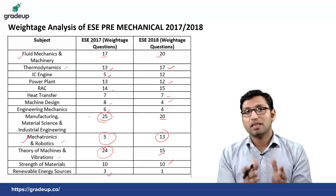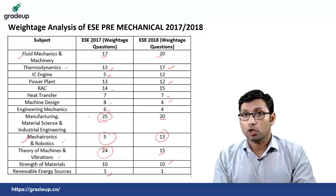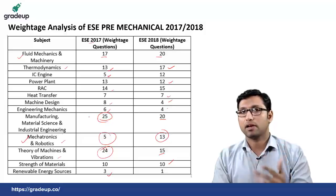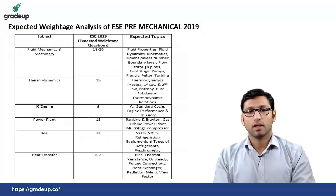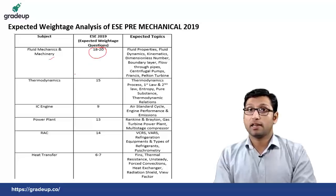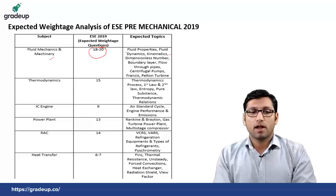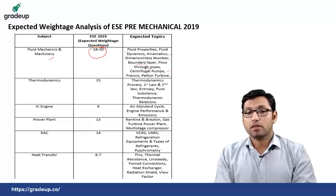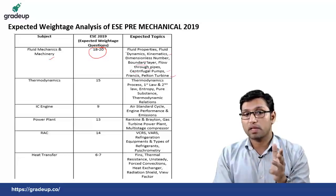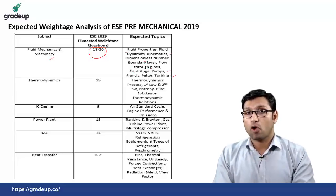Based on this weighted analysis, I have done an expected weighted analysis for ESE prelims paper 2 for the 2019 examination. According to me, from fluid mechanics and machinery there can be around 18 to 20 questions from the topics of fluid properties, fluid dynamics, fluid kinematics, dimensionless number, boundary layer, flow through pipe, centrifugal pump and Francis and Pelton turbine. From thermodynamics there can be 15 questions from thermodynamics processes, first and second law of thermodynamics, entropy, pure substance and thermodynamic relation — since thermodynamic relation was not asked in previous examinations, it may appear this time.